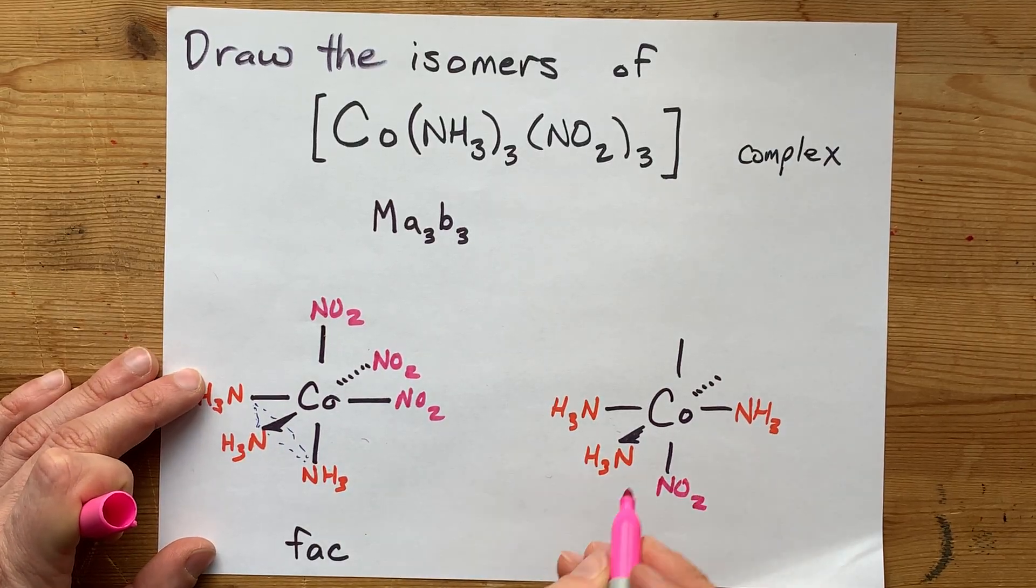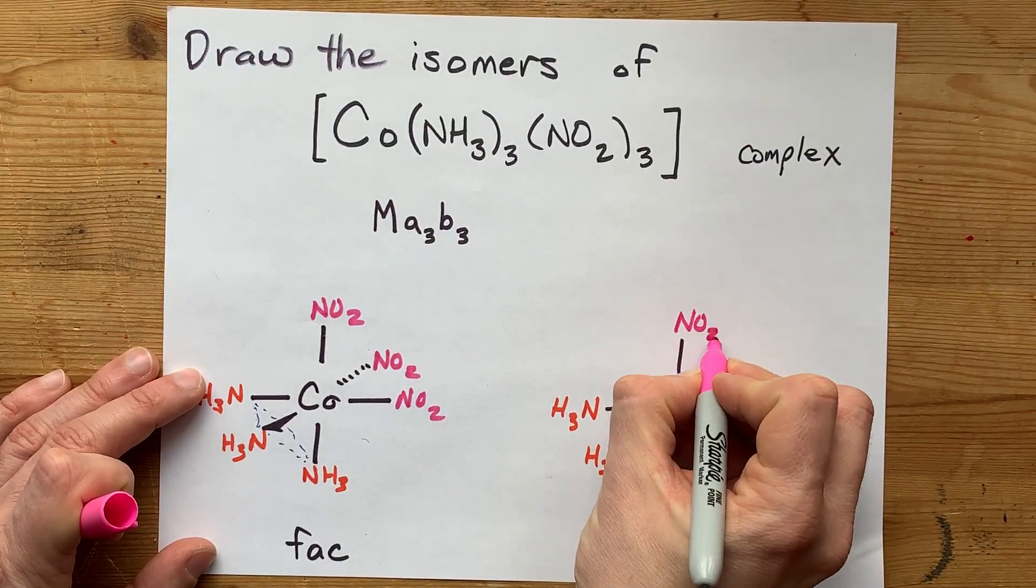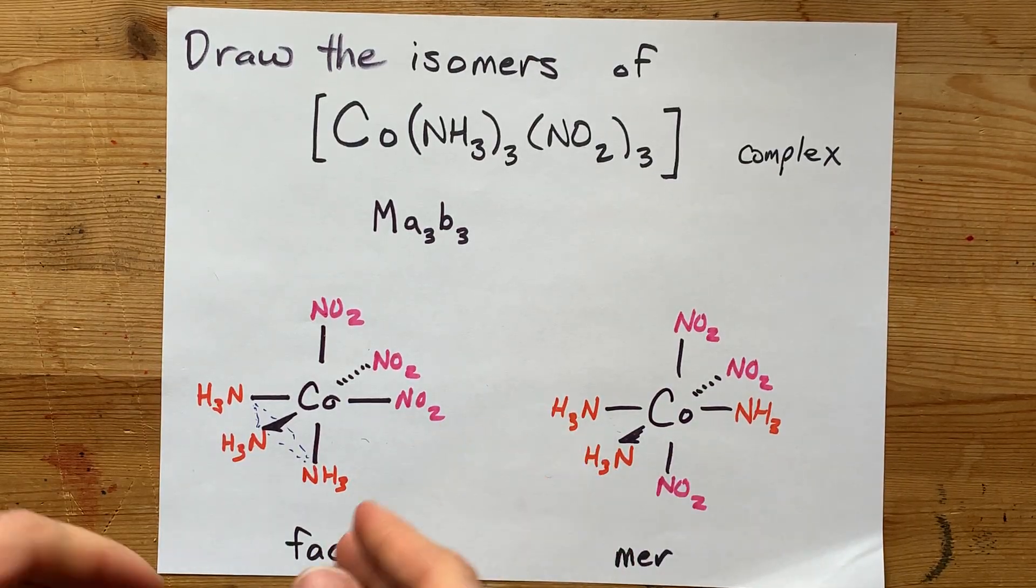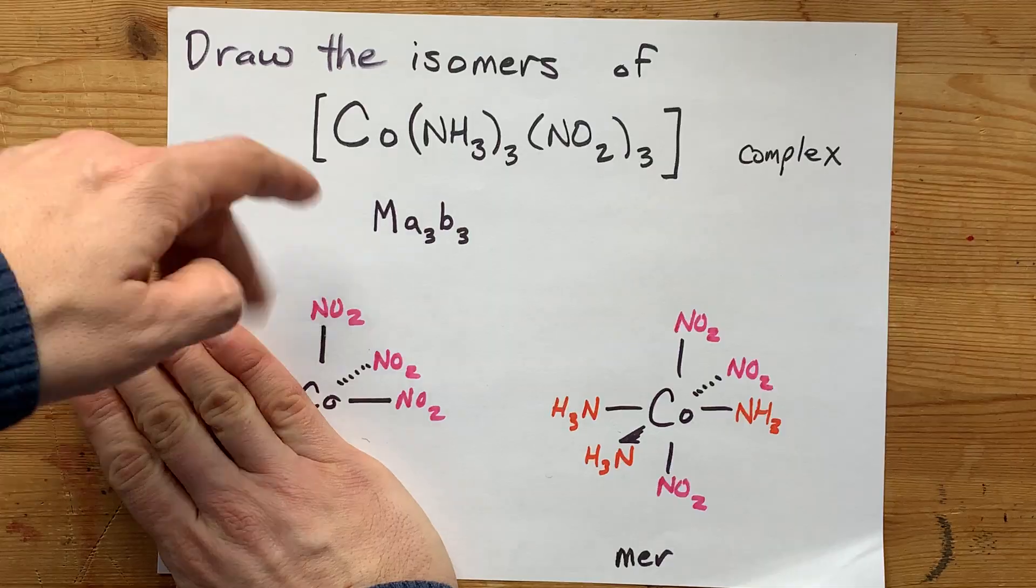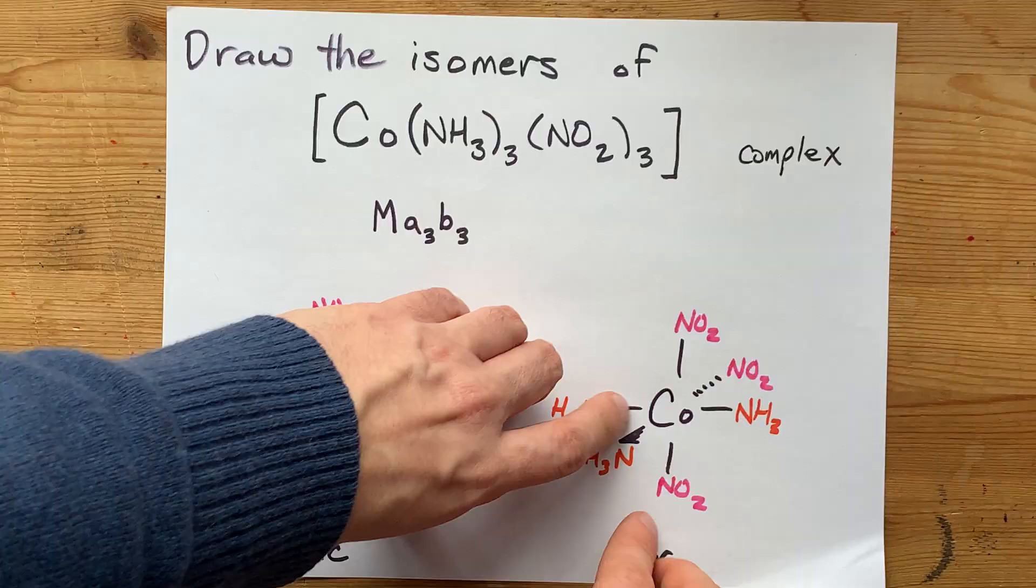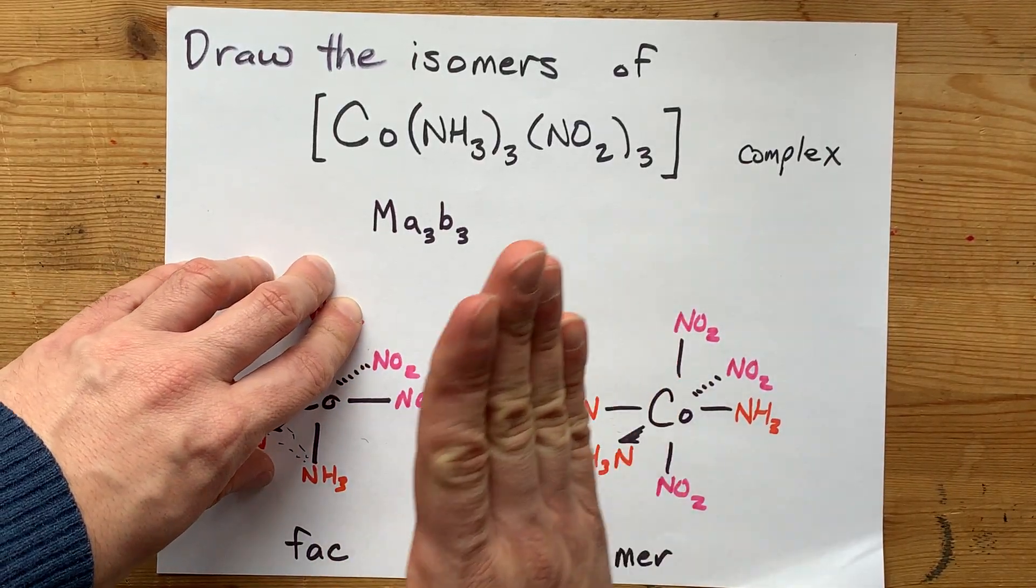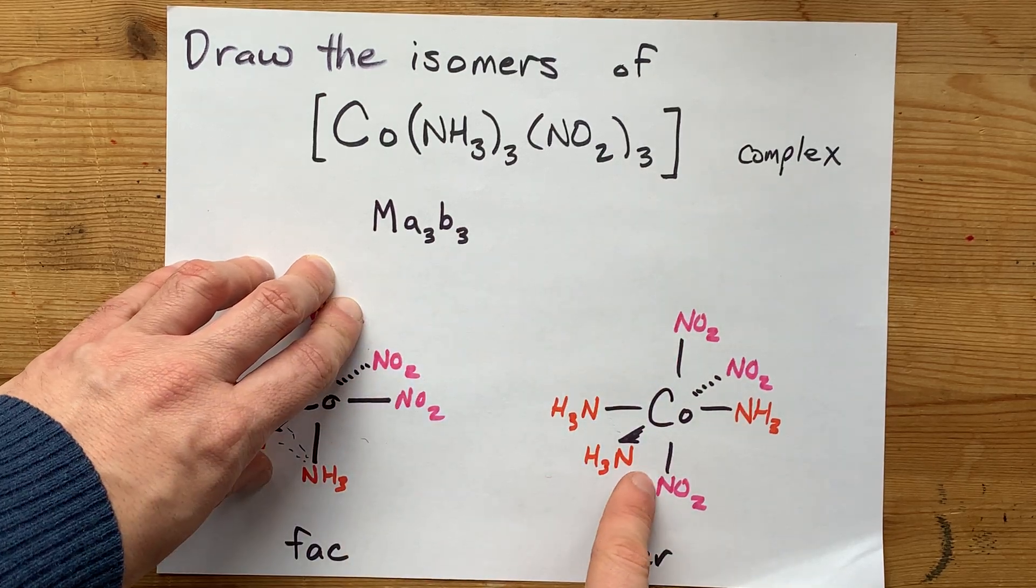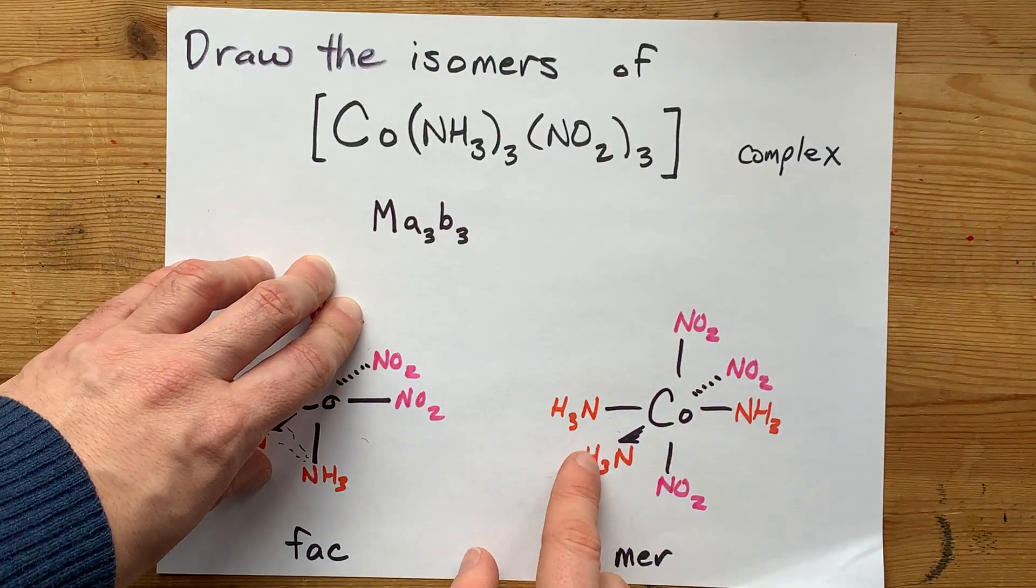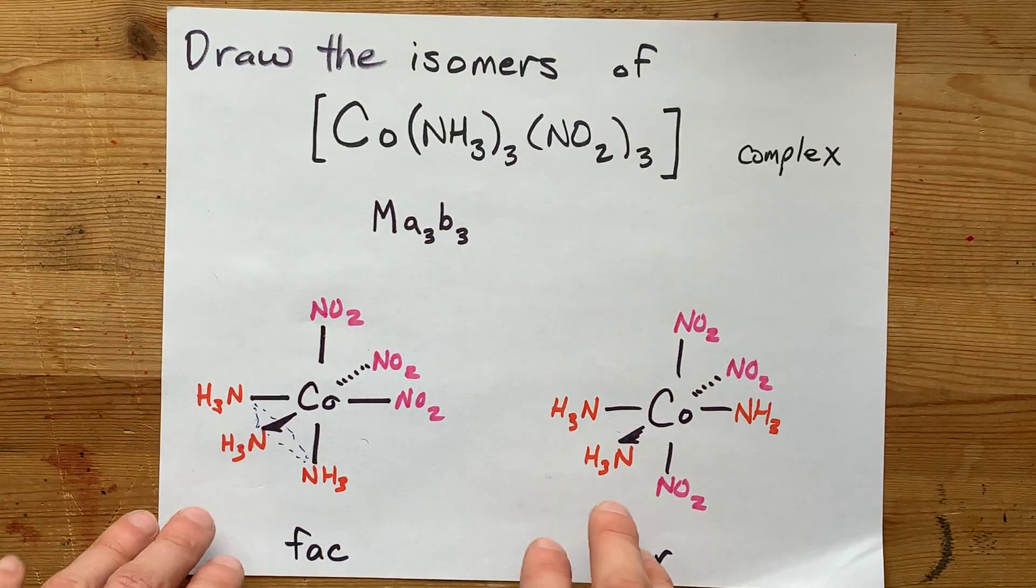The MER isomer means all three of them have to be coplanar with each other. Now again, if you picked NO₂ as the thing to draw all in one cluster, the three NO₂s are clustered on one side of the FAC isomer. And for the NO₂s, in terms of slicing the molecule this way into the page, you've got the three NO₂s along that plane, but that's also coplanar with the N of this NH₃. So it should make sense.